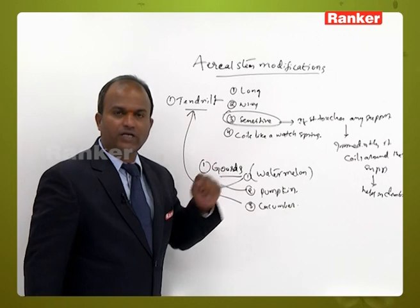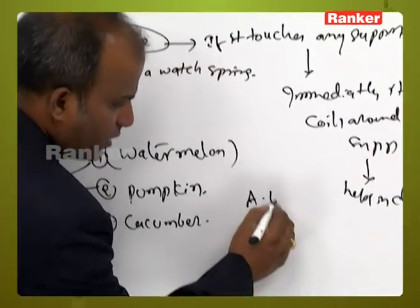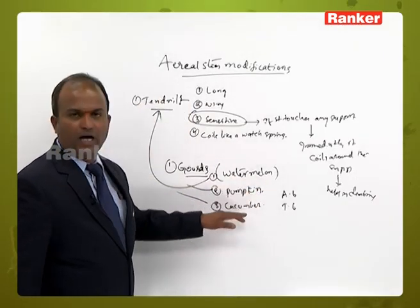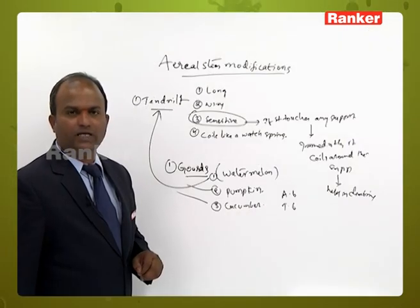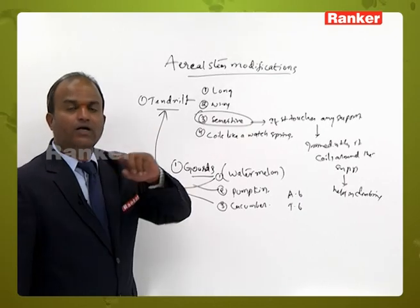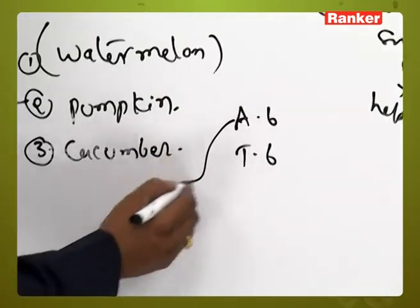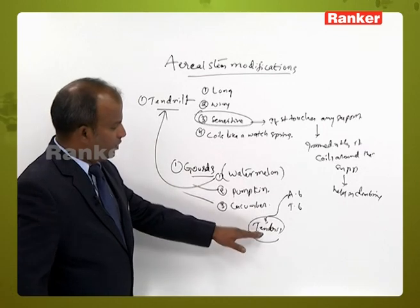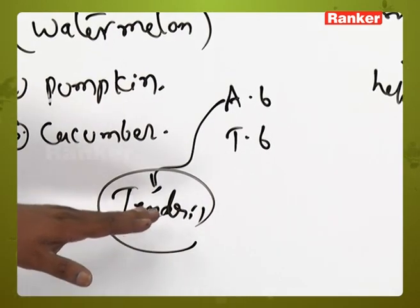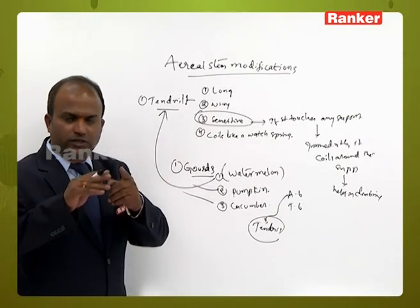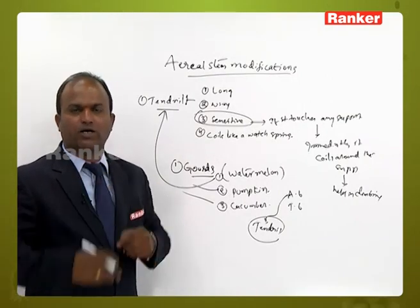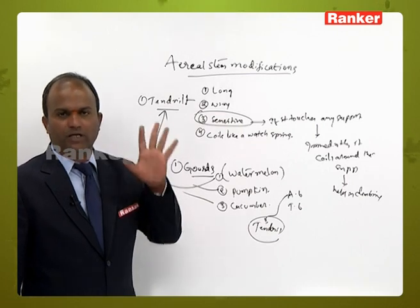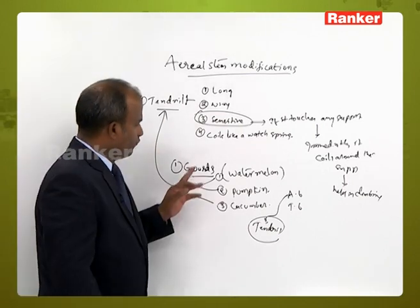But which bud is modified into a tendril here? Whether the axillary bud or the terminal bud? In these three plants — watermelon, pumpkin, and cucumber — the axillary bud is modified into a tendril. Due to the sensitivity nature, it coils around the support and helps in climbing to receive sunlight and prepare food by photosynthesis.